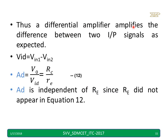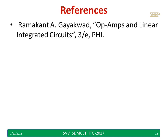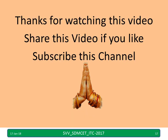Thus the differential amplifier amplifies the difference between the two input signals as expected. Since VID equals VIN1 minus VIN2, the differential gain AD equals V0 divided by VID, which is simply RC divided by RE. AD is independent of RE since RE does not appear in the final simplified equation. Thanks for watching this video. Please share and subscribe to the channel.